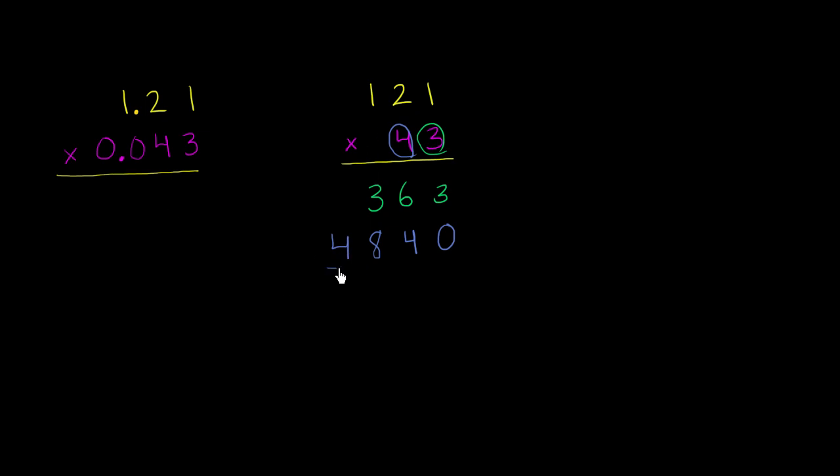And now we can just add all of this together. And we get, let me do a new color here, 3 plus 0 is 3, 6 plus 4 is 10, 1 plus 3 plus 8 is 12, 1 plus 4 is 5. So 121 times 43 is 5,203.